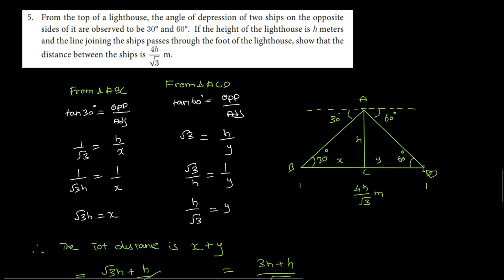So the distance between the ships, the distance between B and D, is 4h by root 3 meters. We need to prove this. So first we'll find the distance BD. From triangle ABC, tan 30 equals opposite by adjacent.